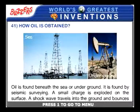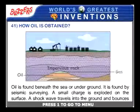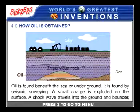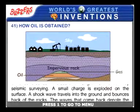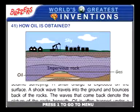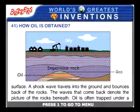Oil is found beneath the sea or underground. It is found by seismic surveying. A small charge is exploded on the surface, and a shock wave travels into the ground and bounces back off the rocks. The waves that come back denote the picture of the rocks beneath.